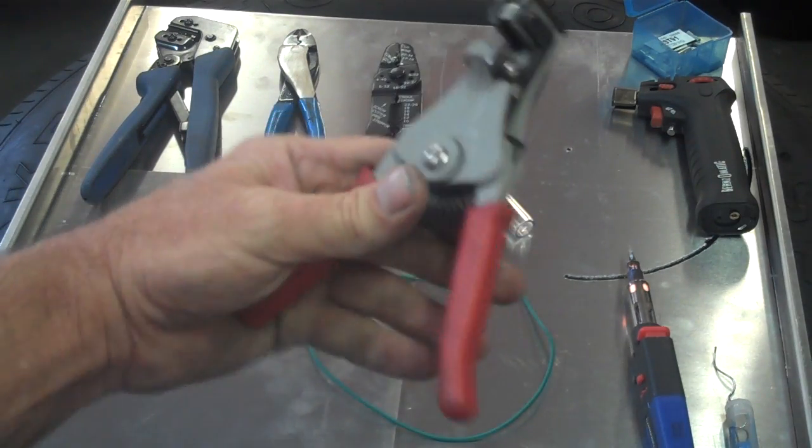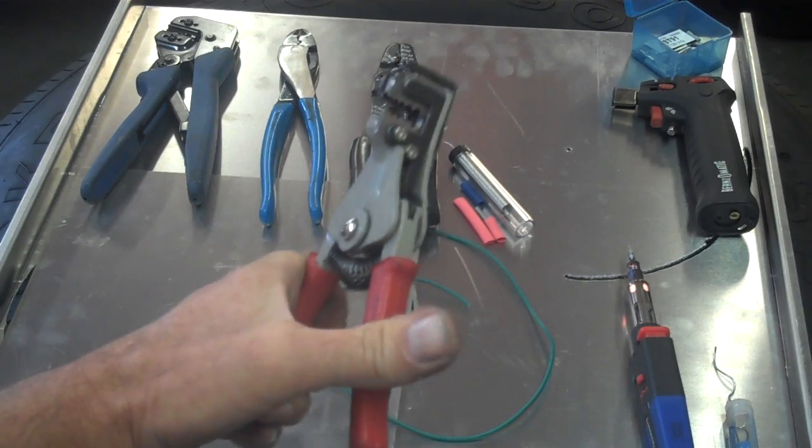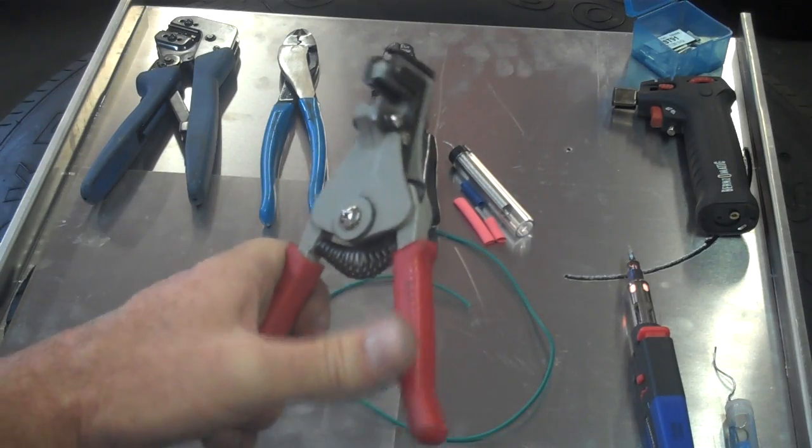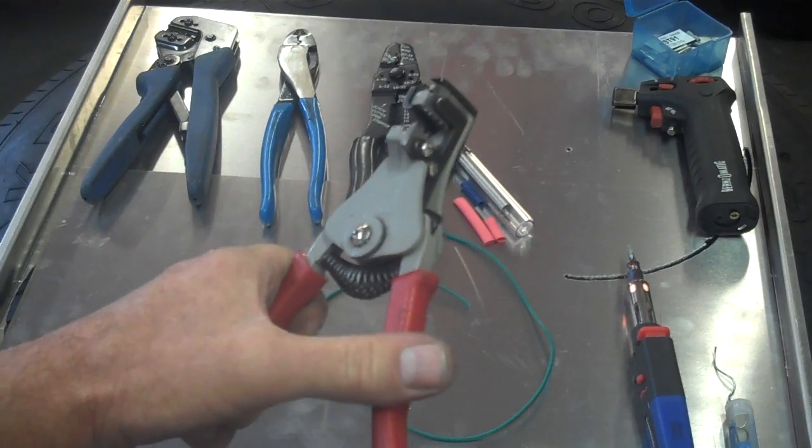This is a pair of lever-action type wire strippers. I like these a lot. They work really well when we're underneath dashes and we're working in close quarters.